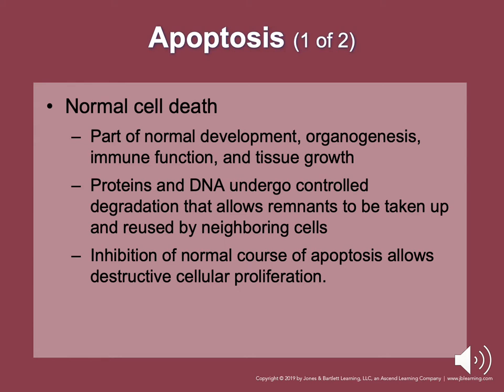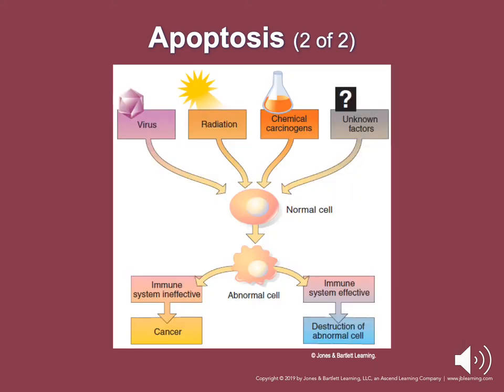When cells are exposed to injury, it takes the normal cell and makes it abnormal. If the immune system is functioning, it destroys these abnormal cells. However, if the immune system is made ineffective by various causes, these cells can become cancerous.